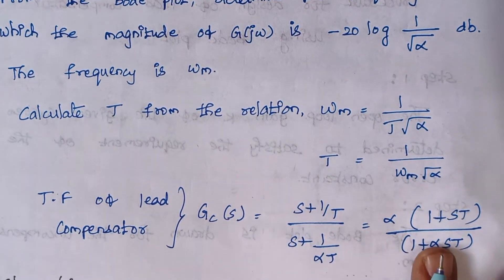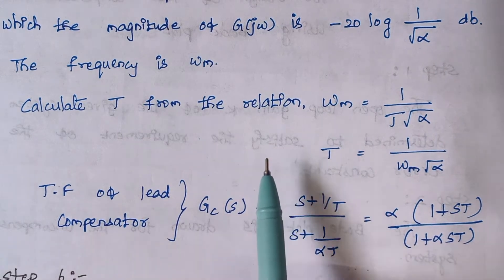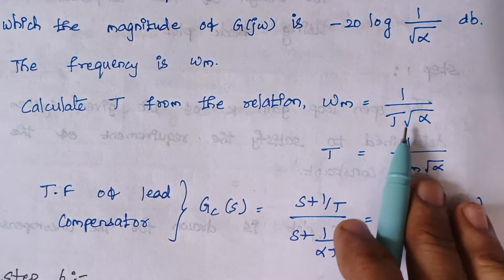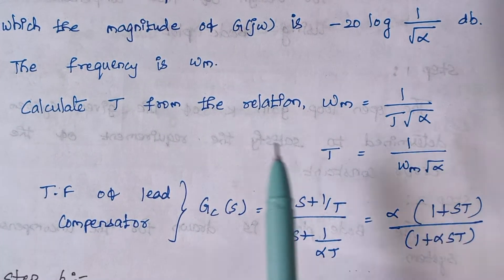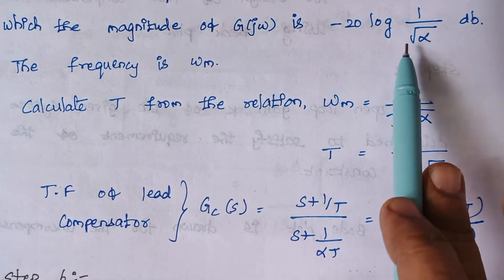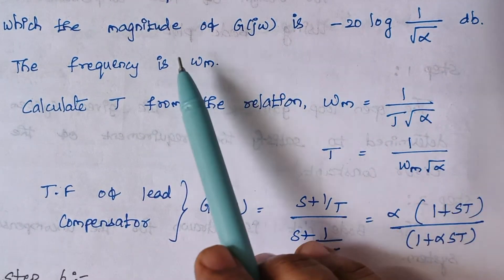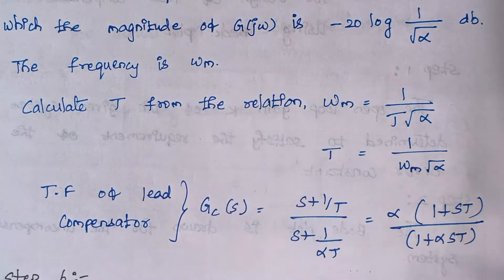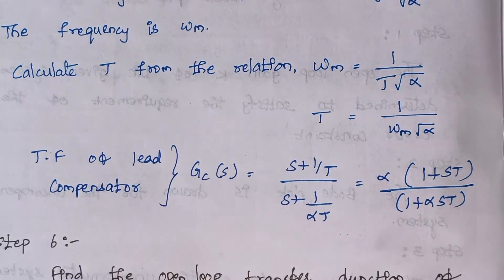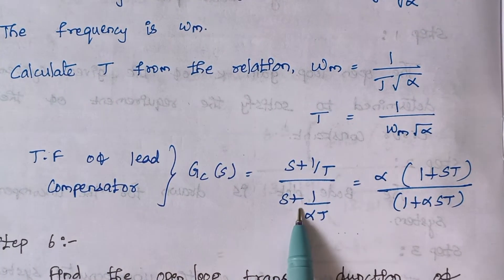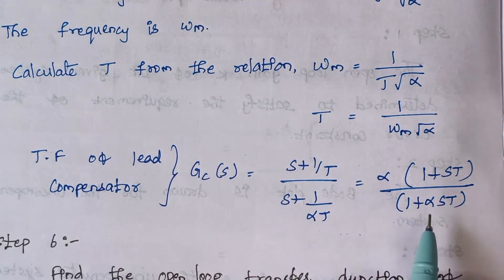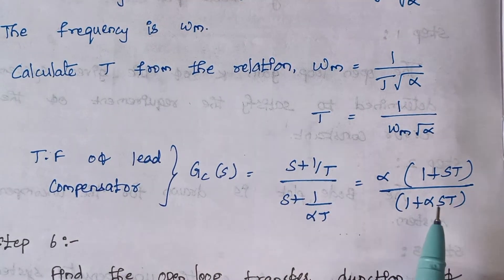Then we need to calculate T. The value of T is given by: omega_m = 1 divided by (T times square root of alpha). The frequency which corresponds to that magnitude is known as omega_m. Since we know omega_m and alpha, we can find T. The transfer function of the lead compensator is given by the standard formula — substitute T and alpha to obtain it.